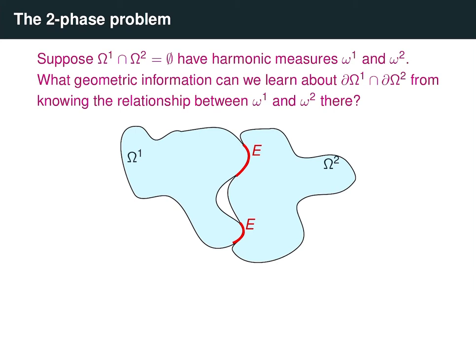Now, what if instead we had two harmonic measures on disjoint domains, and they were mutually absolutely continuous with respect to each other on some subset of the intersection of their boundaries? What kind of structural information does this give us, or what does it tell us about the geometry of the boundaries of these domains?